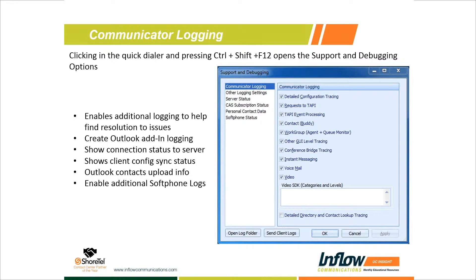The first tab when you open it is the Communicator Logging tab. This is the standard logging that we enable in the system. It allows us to look at things like workgroup agent login activity, calls offered to an agent, instant messaging issues, voicemail, and the buddy list or contacts tab. In the bottom left corner, you can hit 'Open Log Folder' to open the location where all these logs are stored, and you can provide a particular log to the support team for diagnosing an issue.